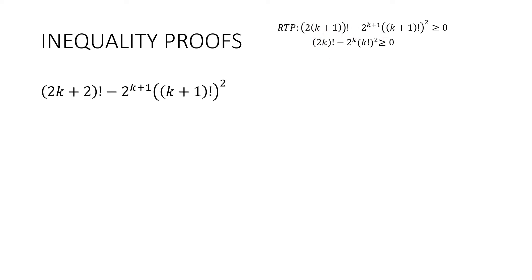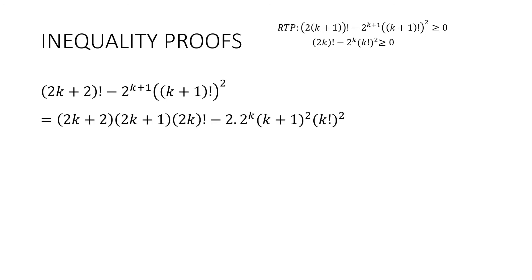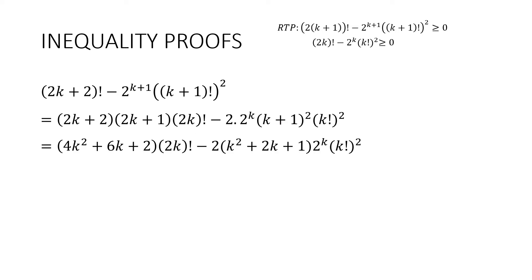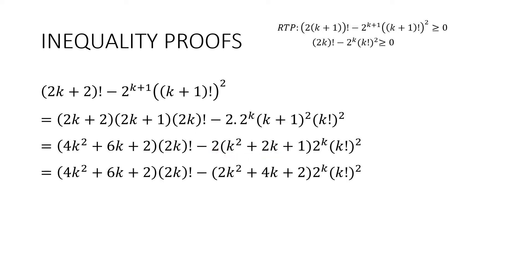Starting with the left hand side, I want to split this up to get the assumption in there. I want 2k factorial, so I take two terms off and split up the k plus one factorial. This gives (2k+2)(2k+1) multiplied by 2k factorial, take away 2 to the k plus one with (k+1) squared brought out of the brackets multiplied by k factorial squared. Expanding and tidying up, then bringing the 2 through. Now I need to get the assumption expression in there — I have 4k squared plus 6k plus 2 lots of 2k factorial.